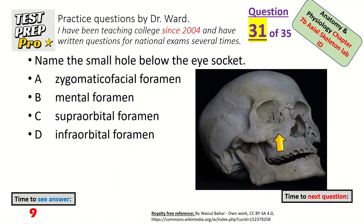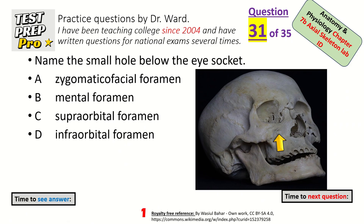Name the small hole below the eye socket. Infraorbital foramen. Infra means below.